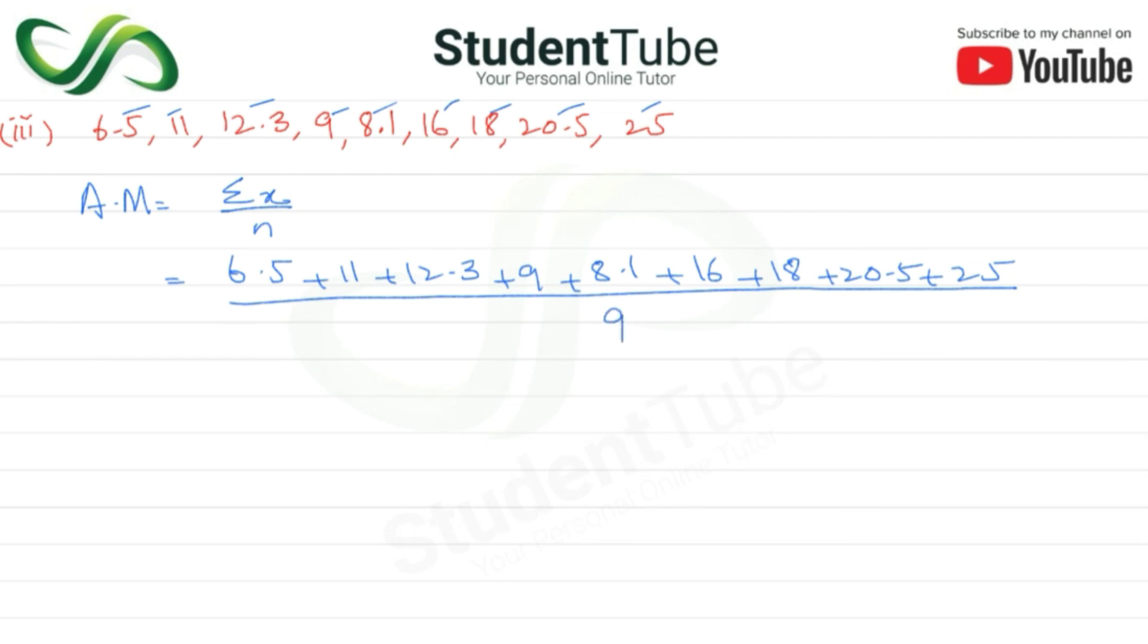126.4 upon 9. Answer: 14.04. Arithmetic mean answer.